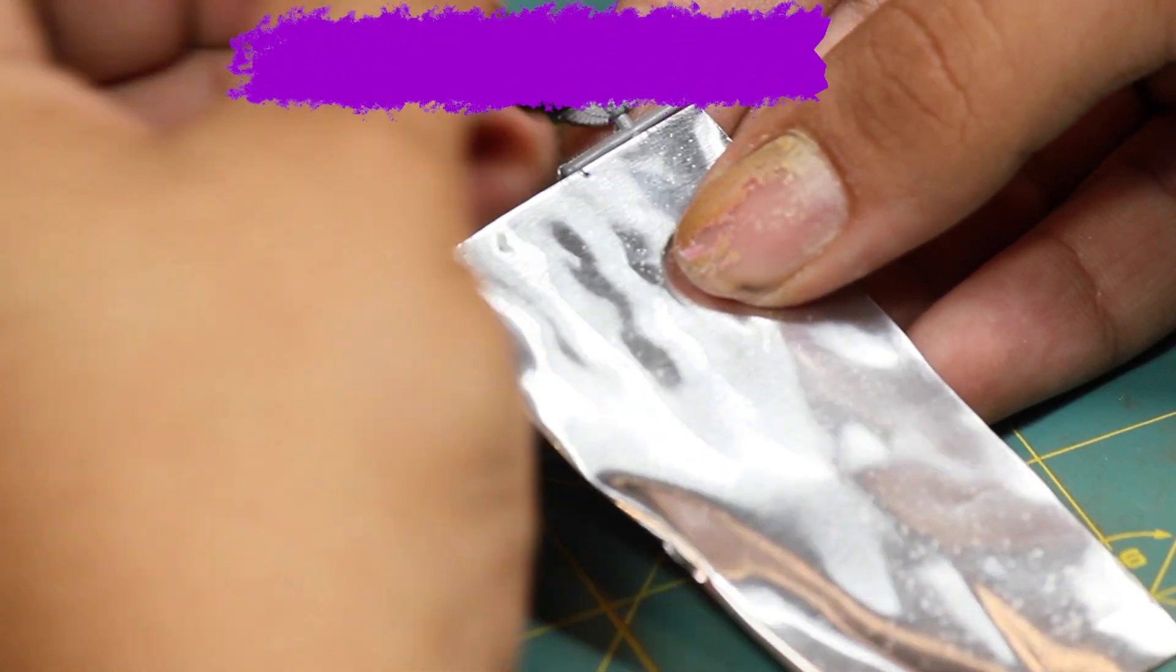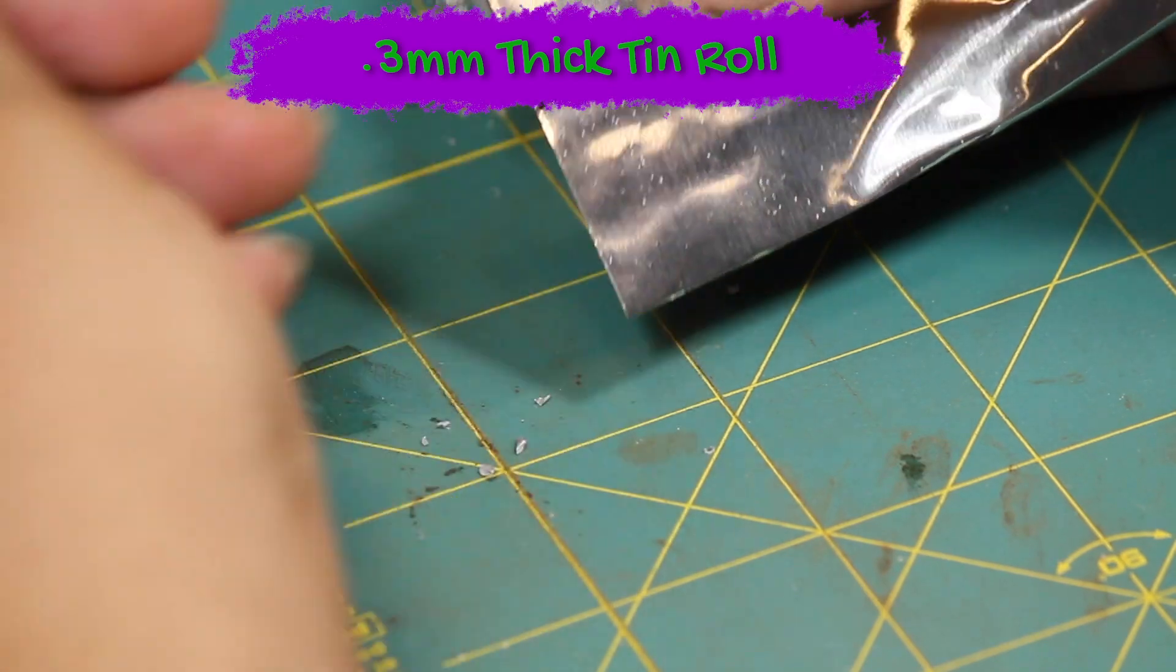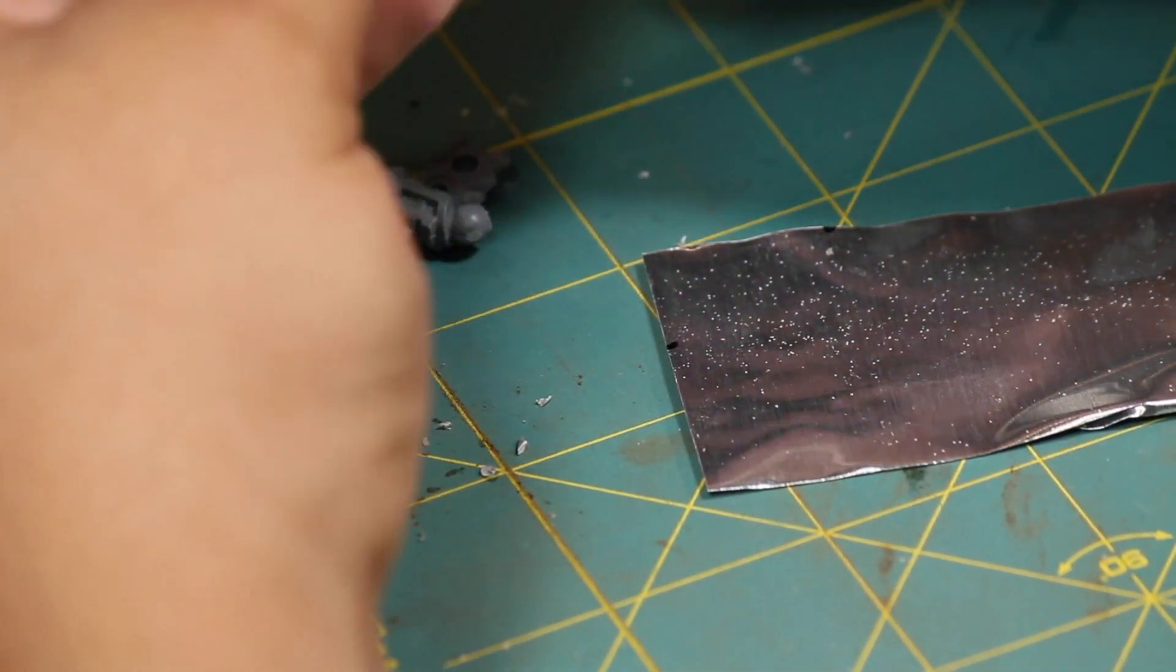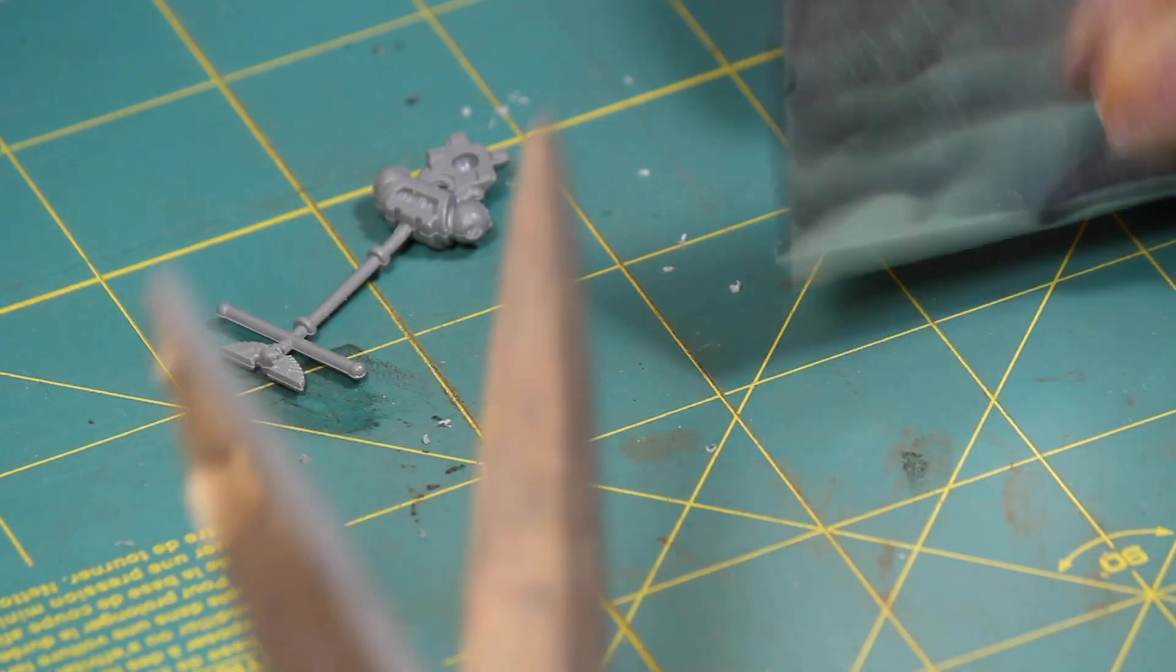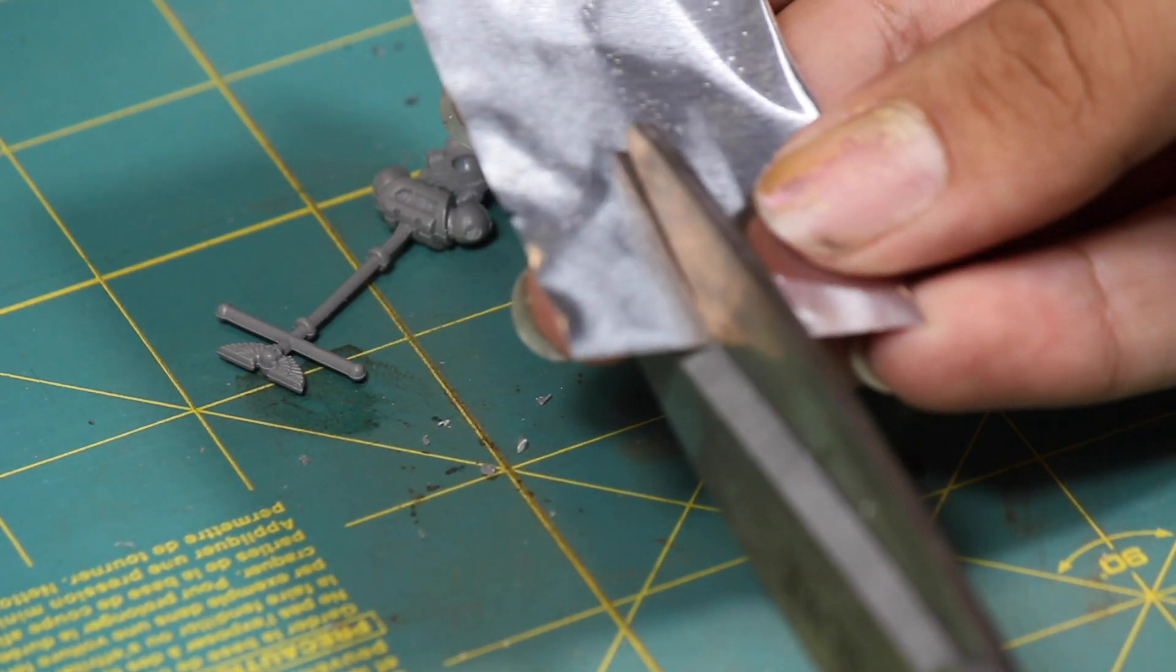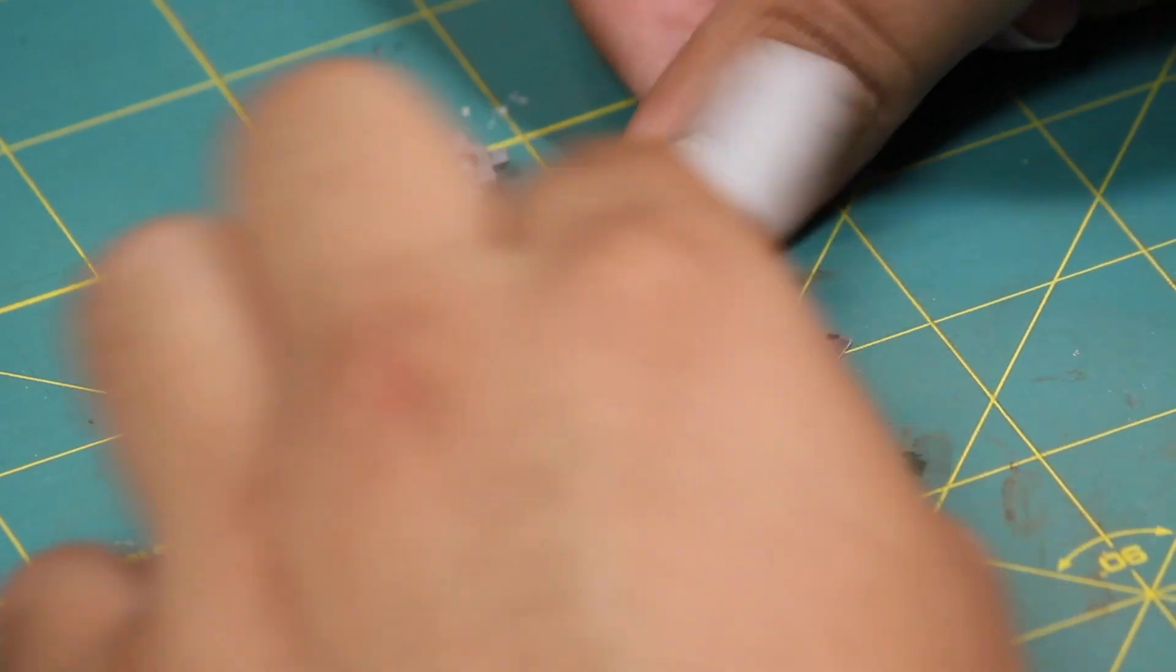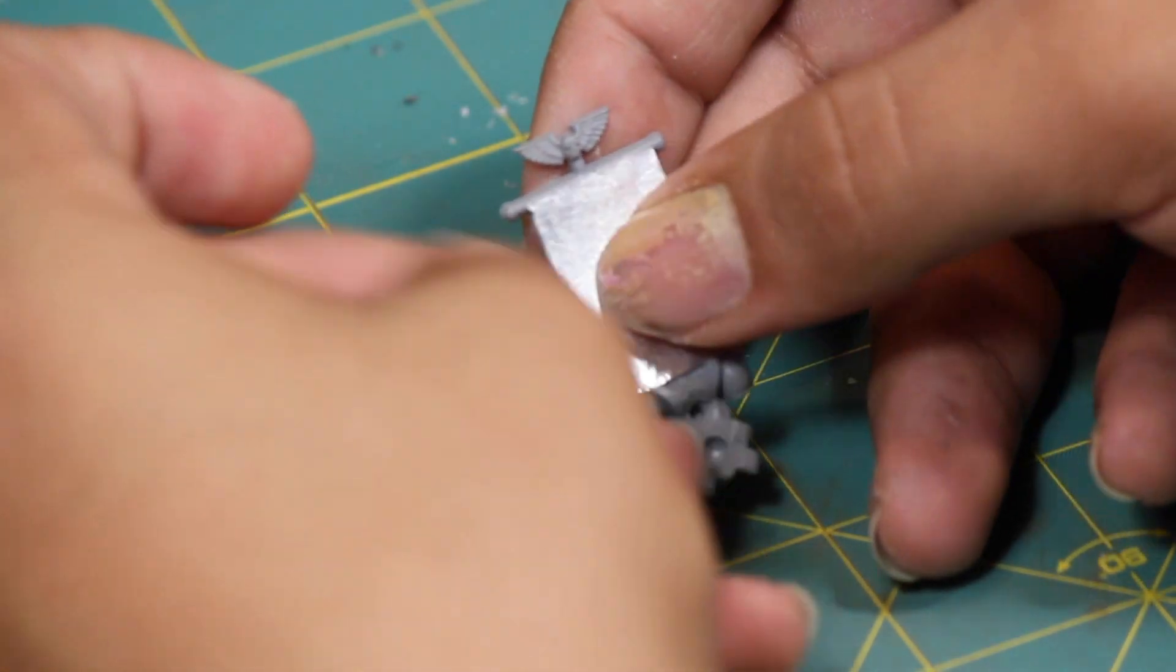Then I take the tin and I use a Sharpie to help mark out how large my banner is going to be. Then I just use some tough scissors to cut through the tin and then I mark out where my tabs are going to go.